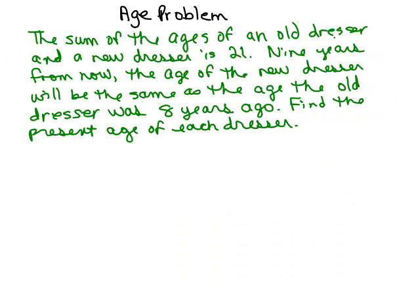We're going to do this age problem, which I just think of as a puzzle. Don't think of it as a word problem — it's a puzzle. The sum of the ages of an old dresser and a new dresser is 21 years. Nine years from now, the age of the new dresser will be the same as the age the old dresser was eight years ago. Find the present age of each dresser.